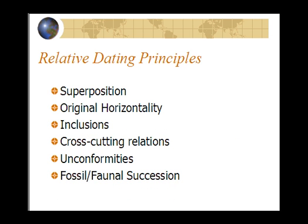What are the relative dating principles? They include superposition, original horizontality, inclusions, cross-cutting relations, and unconformities, and fossil or faunal succession. Now, when actually applying these things in the cross-sections in this course, you'll be using superposition, original horizontality, cross-cutting relations, and unconformities. We won't really be using inclusions or fossil faunal succession, but I'll tell you about what that's all about so you're familiar with it.